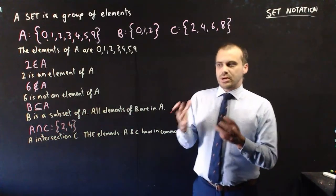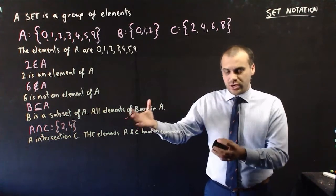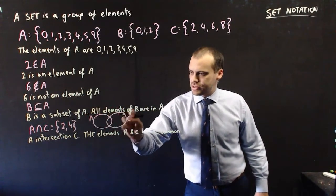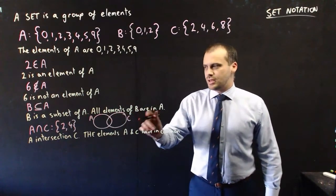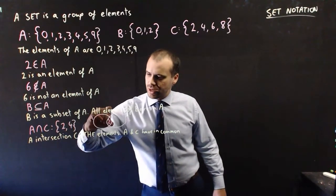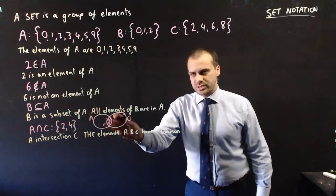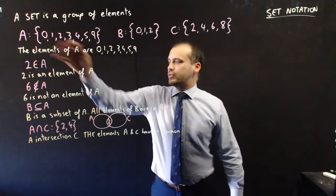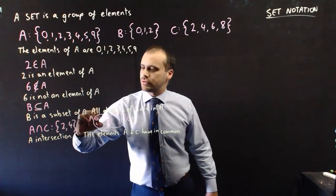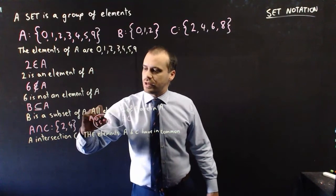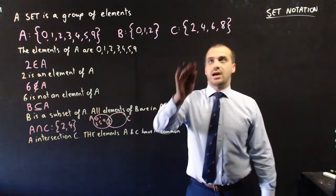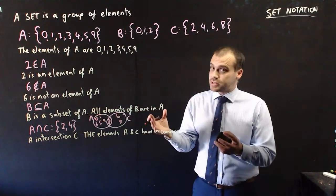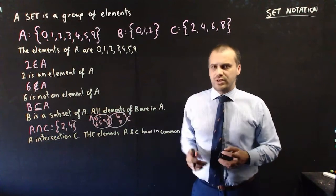It's important to understand here that this is a Venn diagram — an application of a Venn diagram. This circle is the set A, and this circle is the set C. The things they have in common are 2 and 4. The elements that are in A but not in C are everything left over: 0, 1, 3, 5, and 9. And the elements that are in C but not in A are 6 and 8. When we're talking about sets, we're often talking about Venn diagrams.